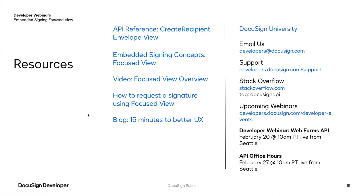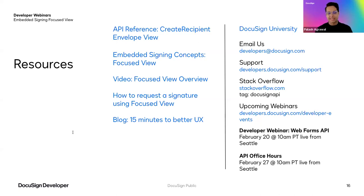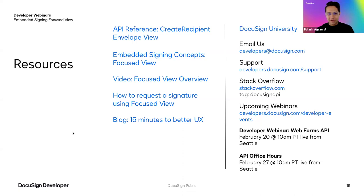On Ian's question about FocusedView for sender view: FocusedView is only available for recipient view right now. The focus is first on high-volume recipients where conversion rates are most important. For sender view use cases, please share your feedback at developers@docusign.com — we'd love to learn more about where you see the need.